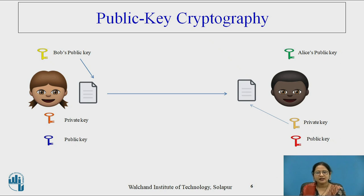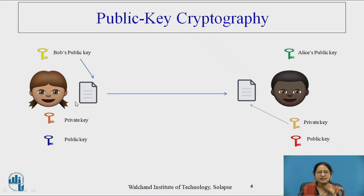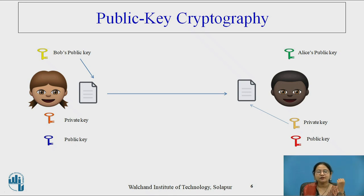In the pictorial representation of Bob and Alice, Alice uses Bob's public key to encrypt a message, while Bob uses his own private key to decrypt and get the message. So two keys — private and public — are used for encryption and decryption.